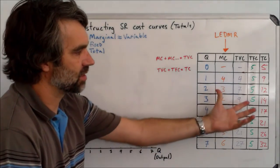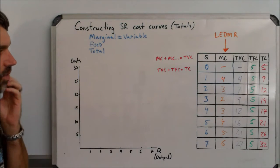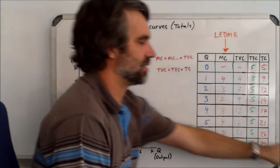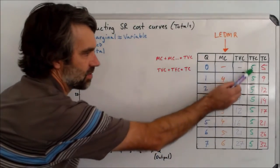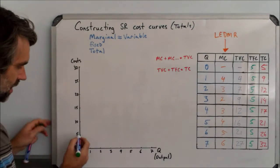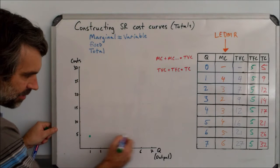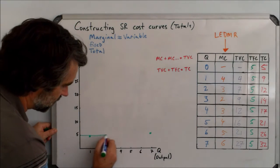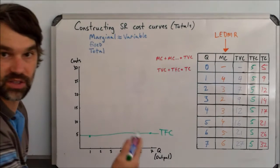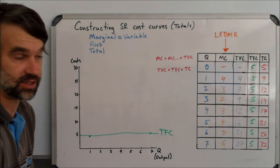Now we're going to take this information and bring it across onto our cost curves. Let's start with fixed costs because it's actually the easiest. So with fixed costs, all this is going to be is five, which is right here. And if I produce one, my fixed costs are five. And if I produce seven, my fixed costs are five. So fixed costs is just a horizontal line all the way across.